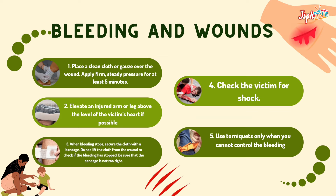For bleeding and wounds: place a clean cloth or gauze over the wound and apply firm, steady pressure for at least 5 minutes. Elevate an injured arm or leg above the level of the victim's heart if possible. When bleeding stops, secure the cloth with a bandage. Do not remove the cloth to check if bleeding has stopped. Ensure the bandage is not too tight, check the victim for shock, and use a tourniquet only when you cannot control the bleeding.